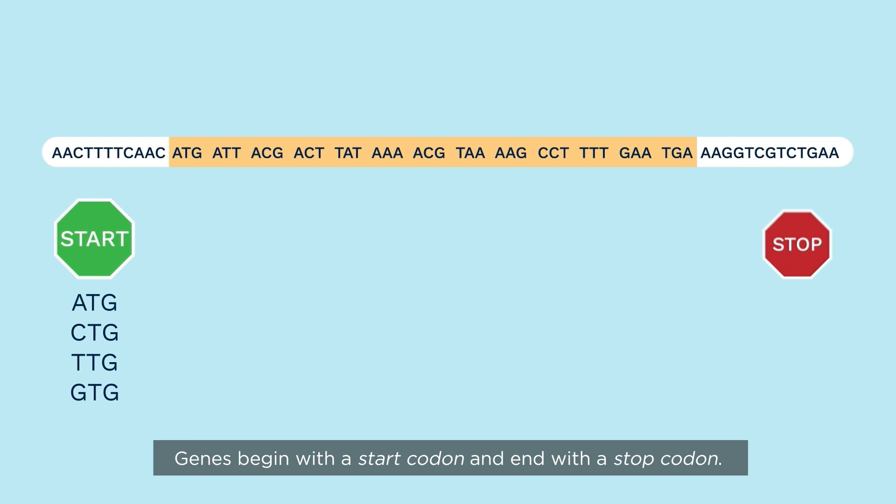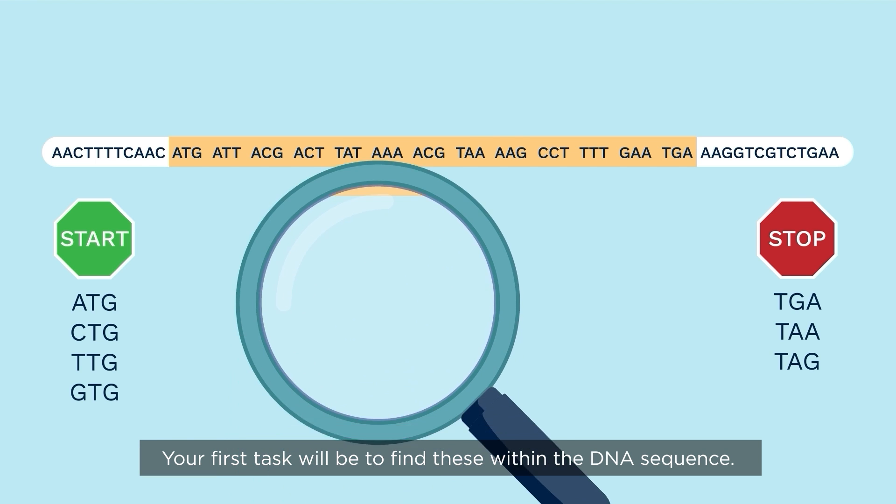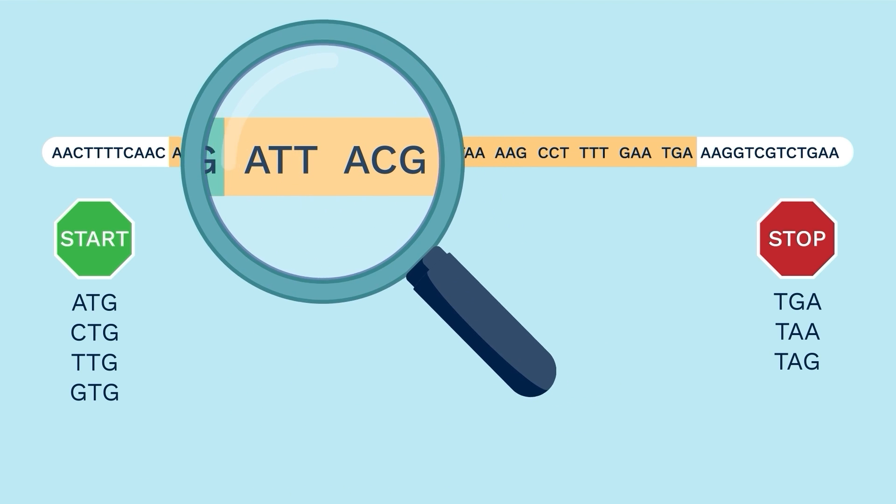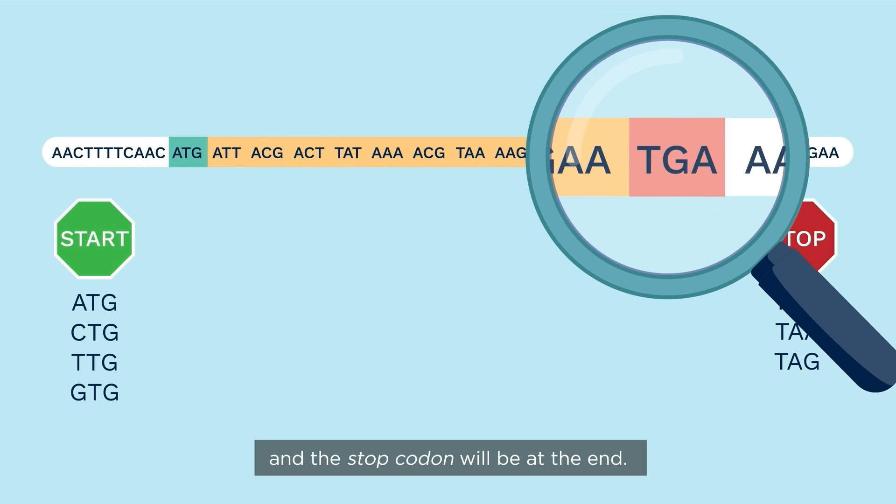Genes begin with a start codon and end with a stop codon. Your first task will be to find these within the DNA sequence. Usually the start codon will be at the beginning of the highlighted gene, and the stop codon will be at the end.